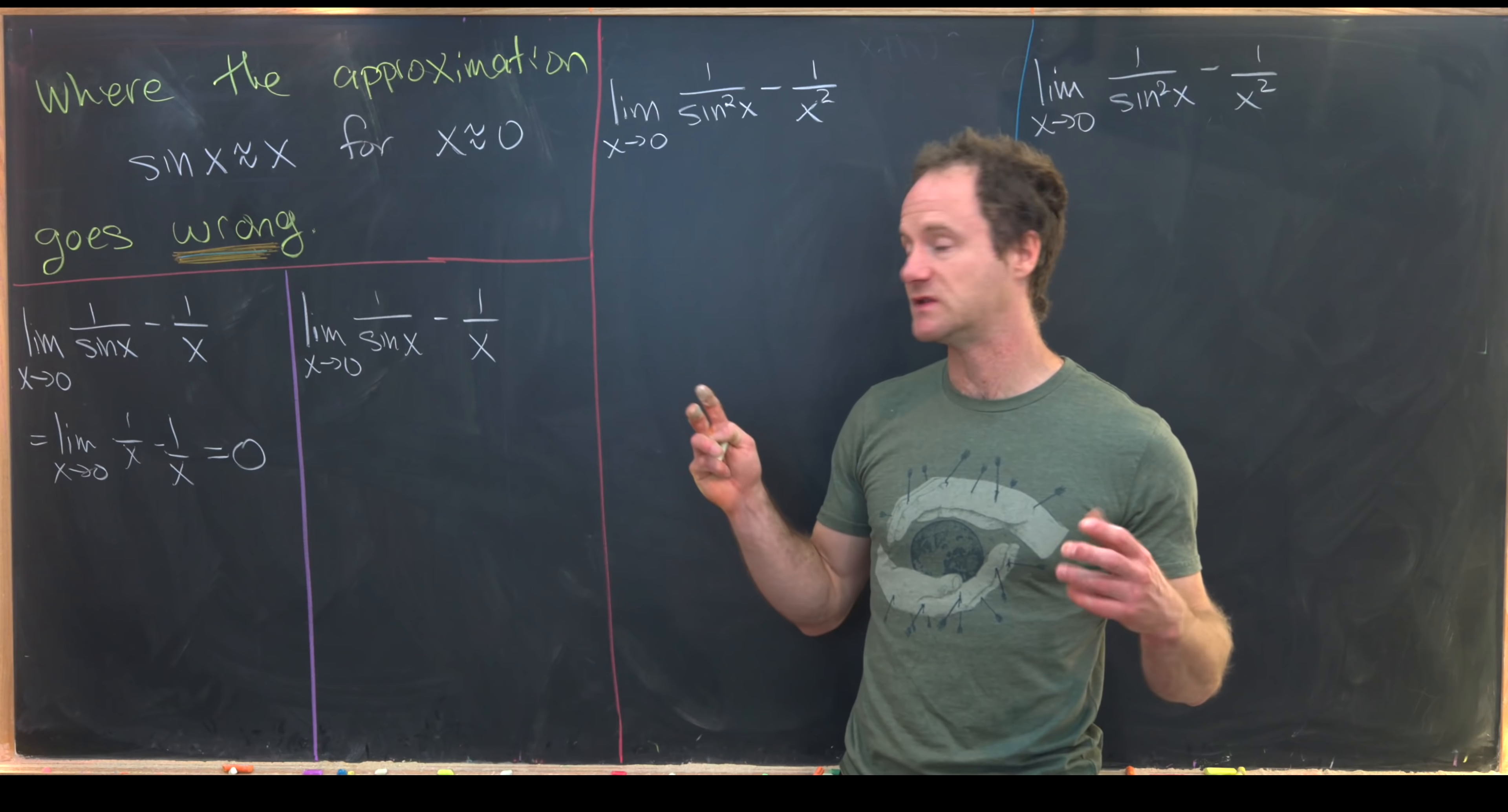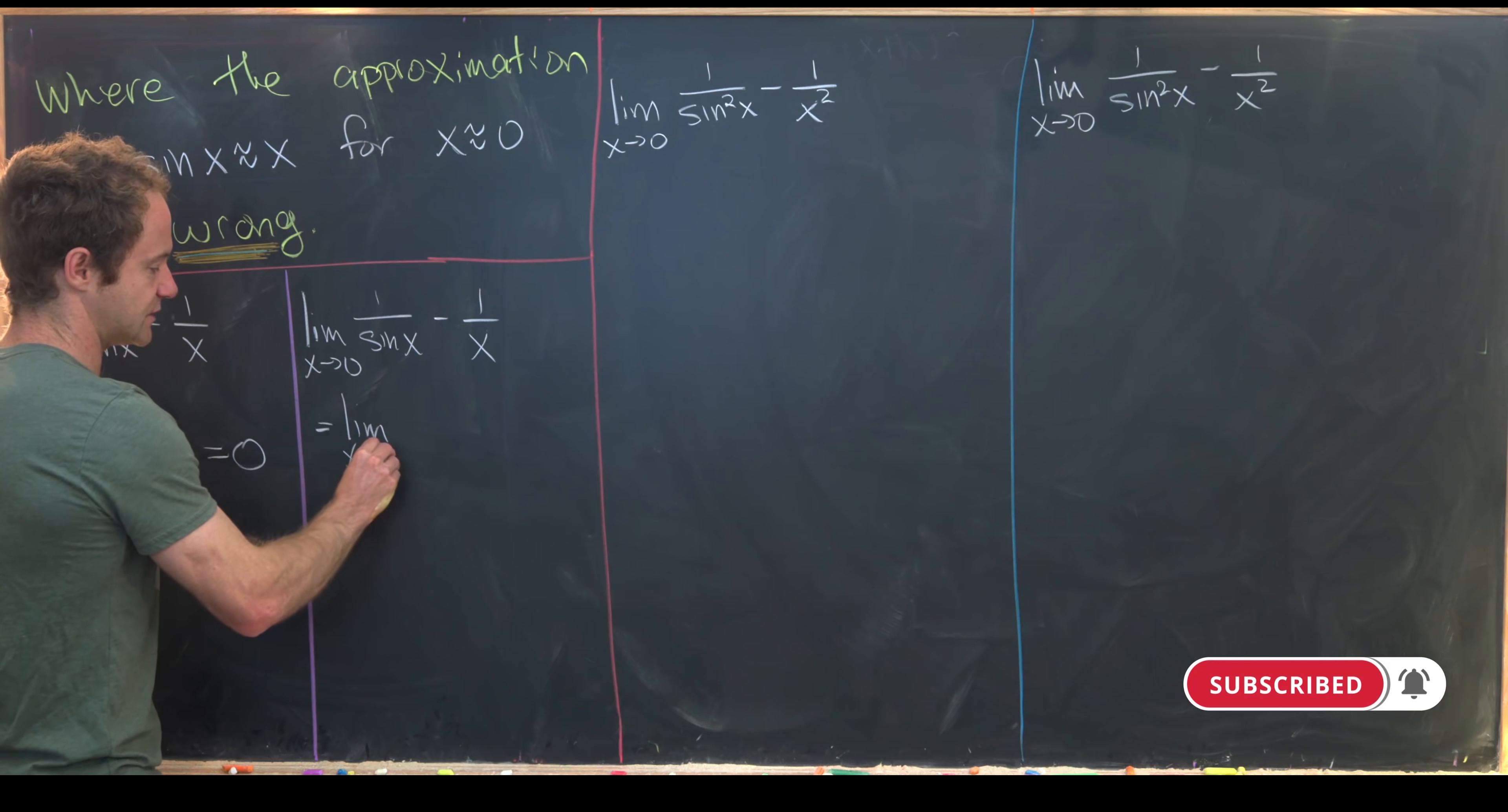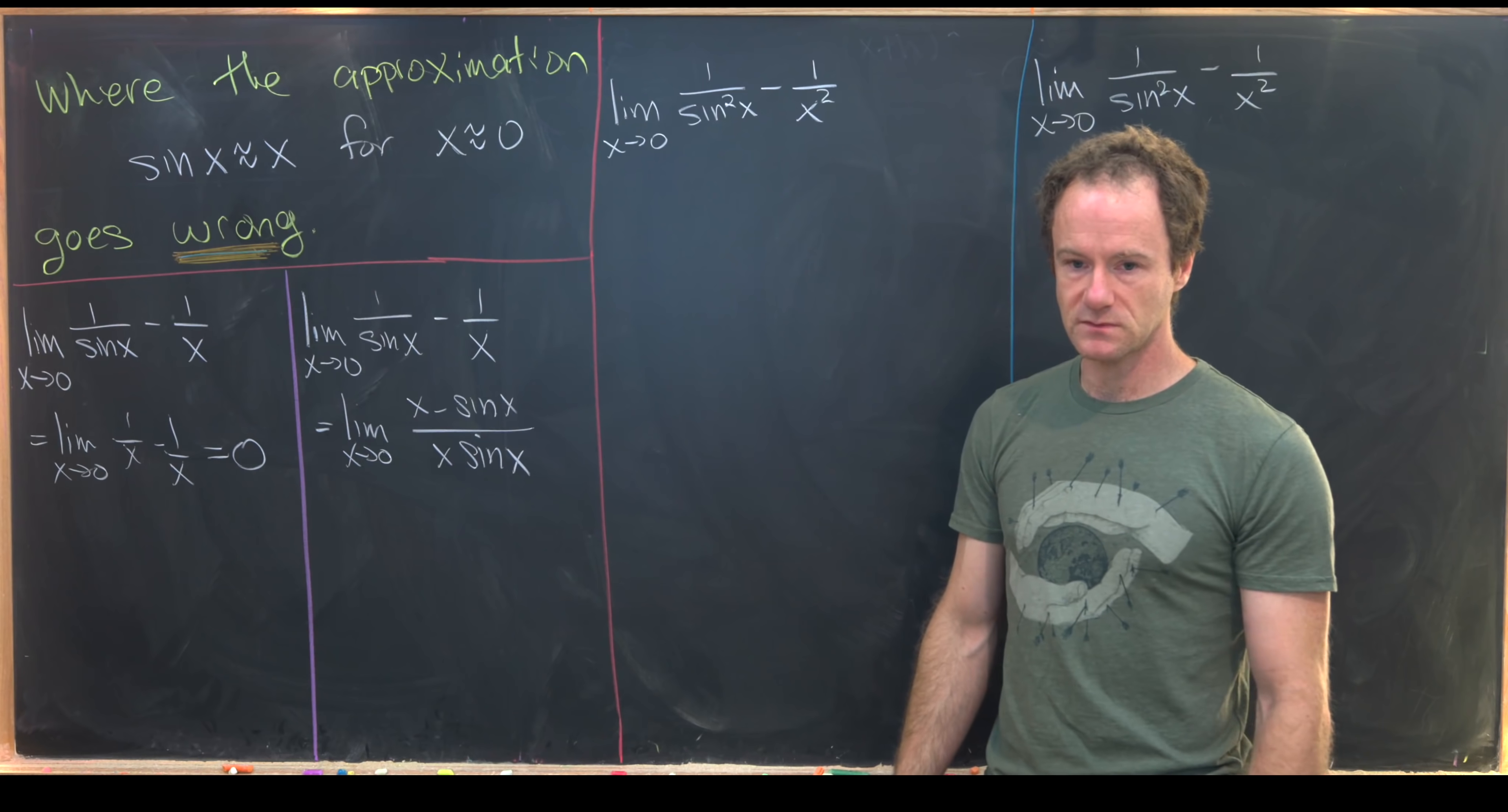Okay, so now let's calculate this using a more formal method. So I'll first put these guys together using a common denominator. That's going to give me this limit as x goes to zero of x minus sine of x over x times sine of x.